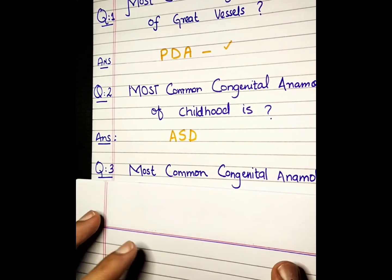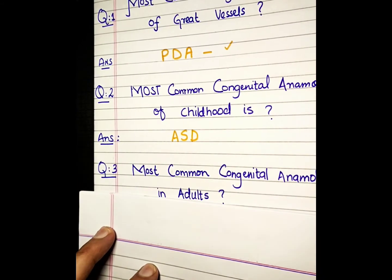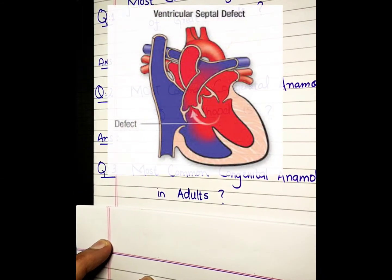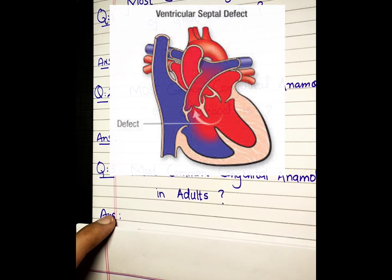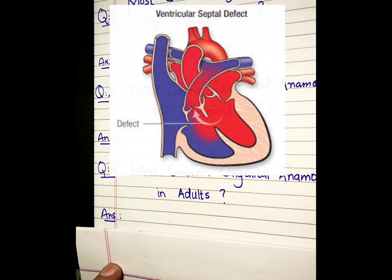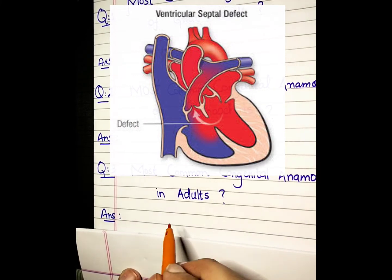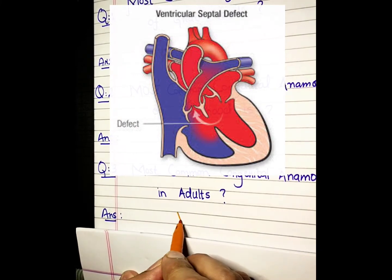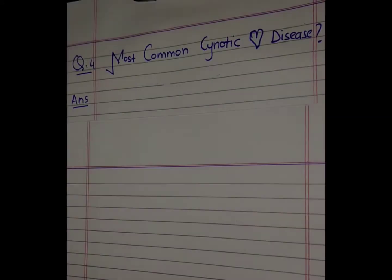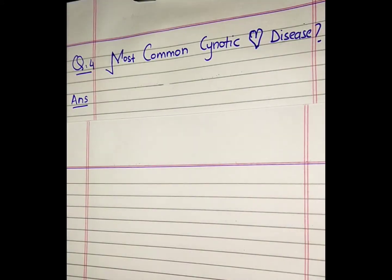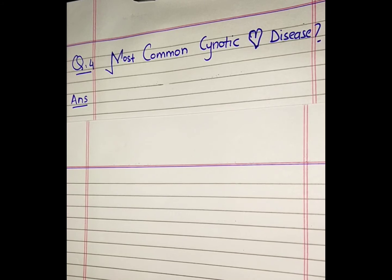What about adults? The most common congenital anomaly in adults — there you go with VSD, Ventricular Septal Defect. Now let's jump into cyanotic heart diseases.